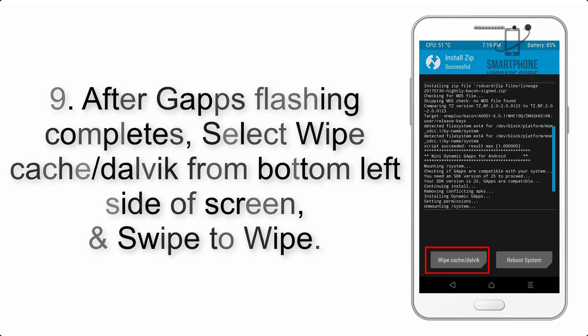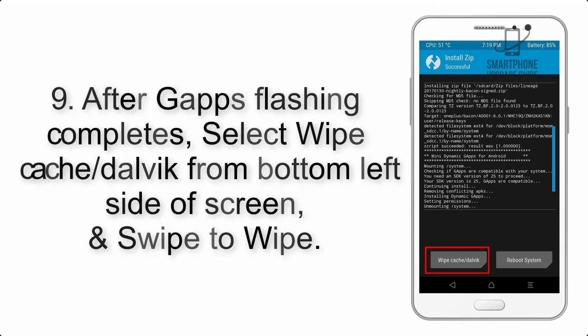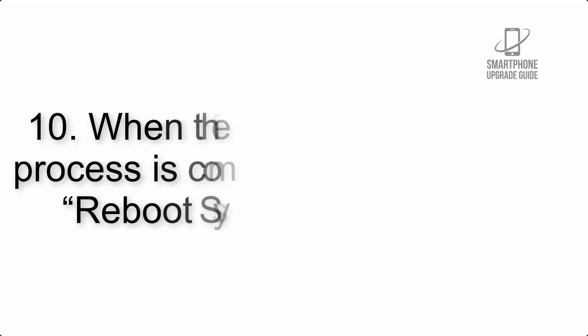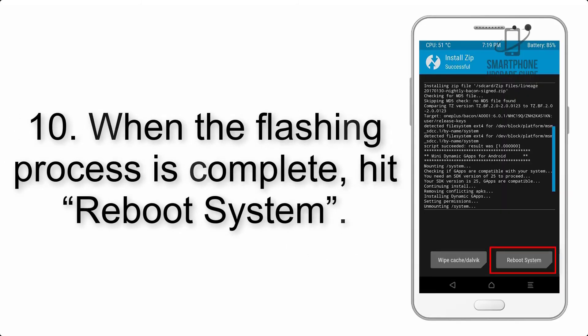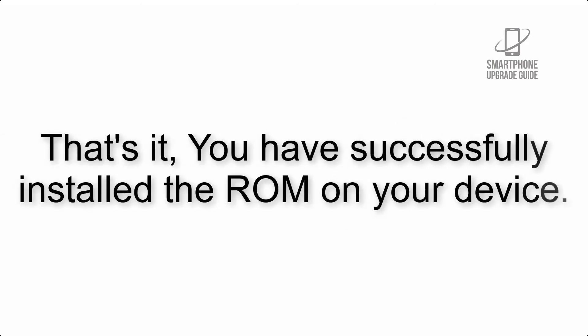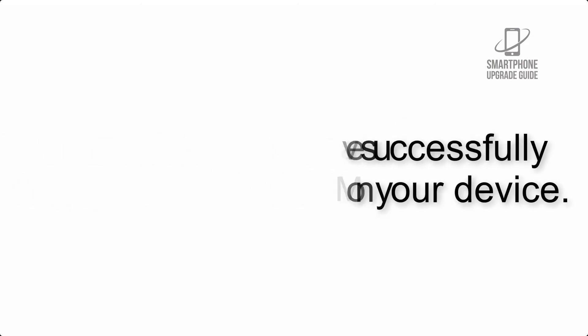Step 8: Flash the GApps zip package in the same manner. Step 9: After GApps flashing completes, select Wipe Cache and Dalvik from the bottom left side of the screen and swipe to wipe. Step 10: When the flashing process is complete, hit Reboot System. That's it — you have successfully installed the ROM on your device.